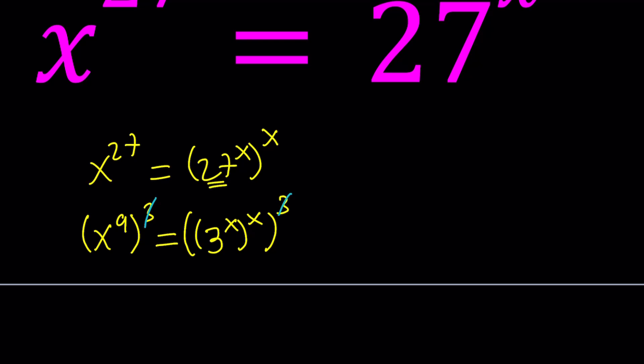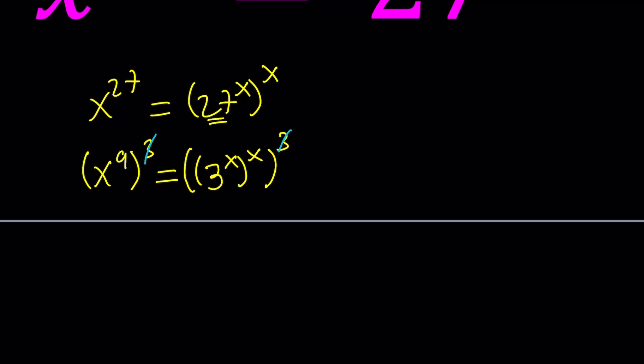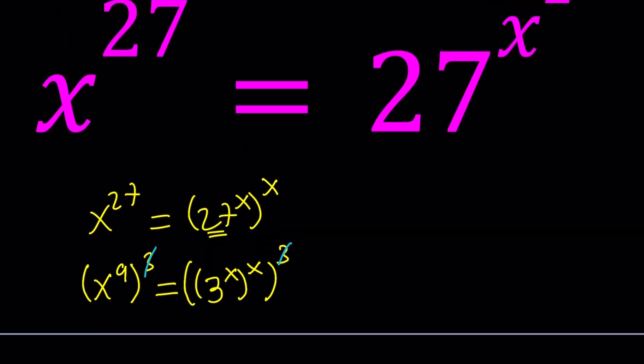My goal is to take the 3 all the way on the outside so we can cancel it out by raising both sides to the power 1/3. Of course, we're working in the real world in this case. Are there any complex solutions? That's a good question.